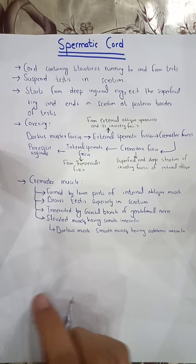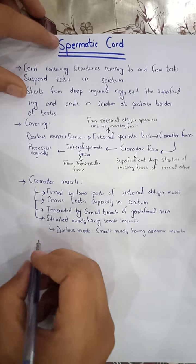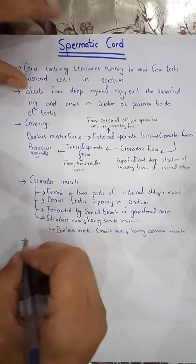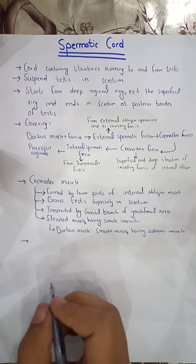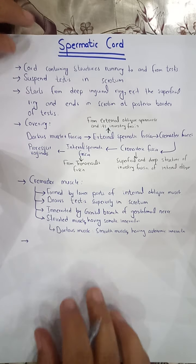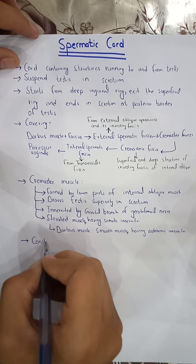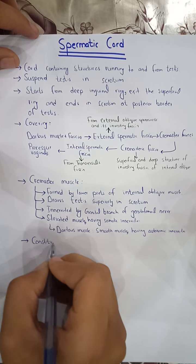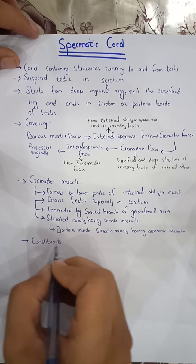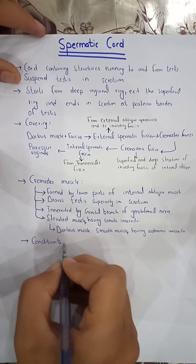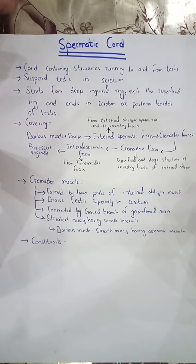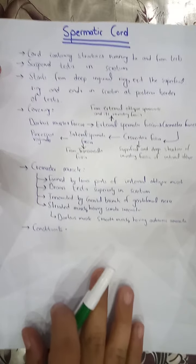The most important topic is the constituents — what is present inside the spermatic cord. I will draw a diagram so that it can be easily remembered.